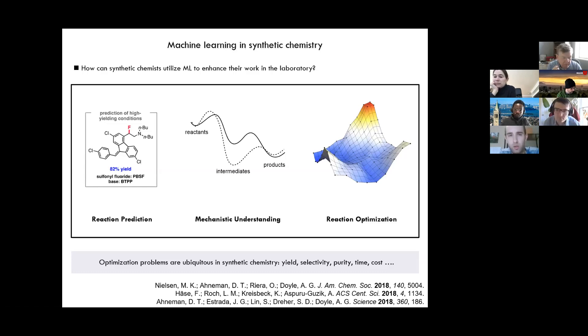And we're particularly interested in reaction optimization because these sort of problems are ubiquitous in synthetic chemistry. From optimizing yield or selectivity, purity, time costs, there are really a lot of different optimization problems that need to be solved in a typical synthetic chemistry problem. And today we're going to be talking about yield optimization.